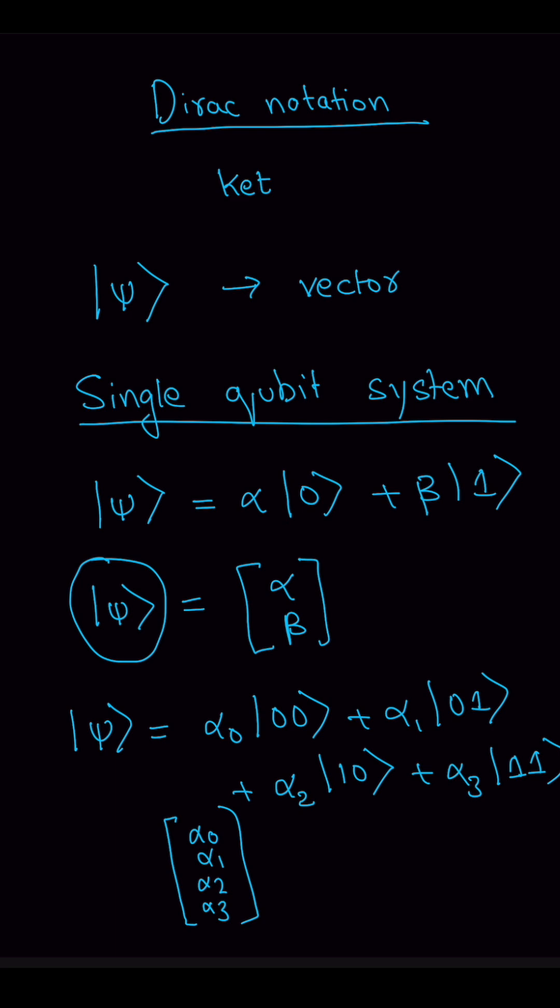Vectors store the probabilities attached to each basis state. Writing in this way makes it very easy to represent quantum superpositions. It's a compact and powerful way to represent the vectors involved in quantum mechanics. Thank you for watching.